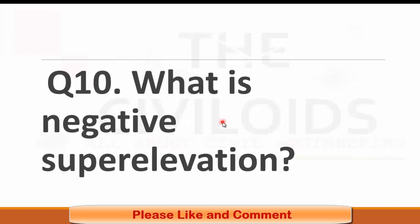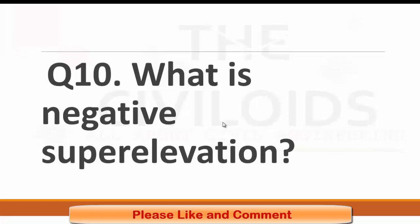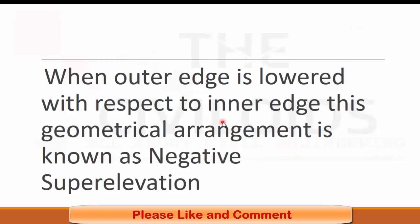Question number ten: What is negative super elevation? We know that the geometrical arrangement of banking of outer edge of the road or railway track is known as super elevation. Negative super elevation is the inverse of super elevation. In a negative super elevation, the outer edge is lowered with respect to the inner edge. This geometrical vertical arrangement is known as negative super elevation. Negative super elevation is provided in railway tracks at point where branch railway track is separated from main railway track.